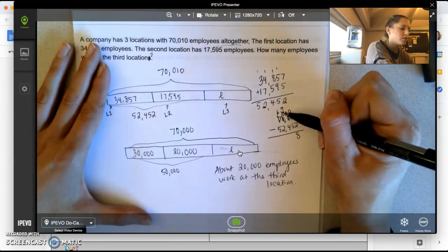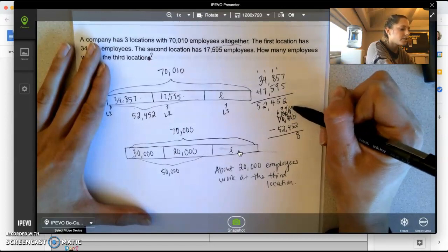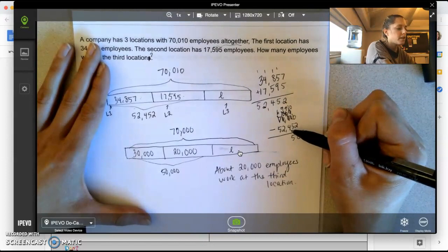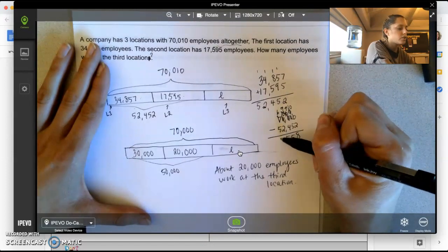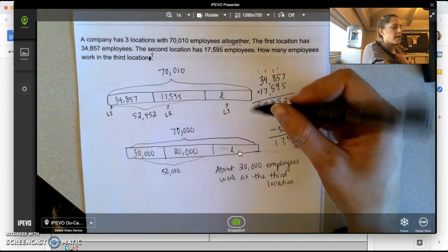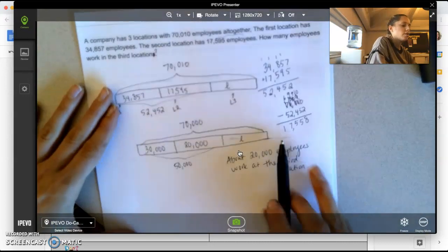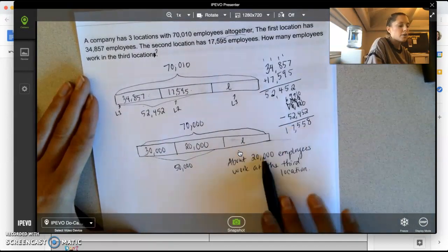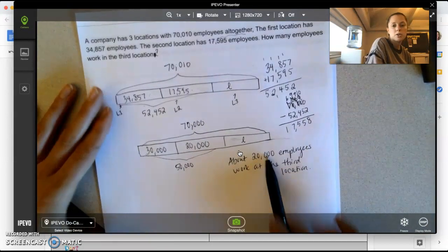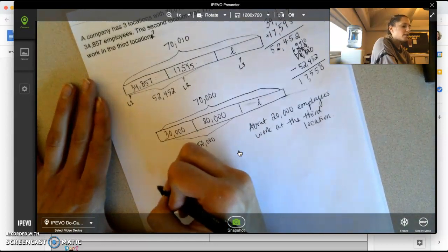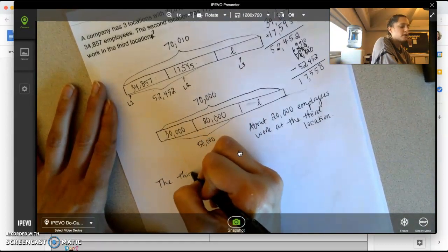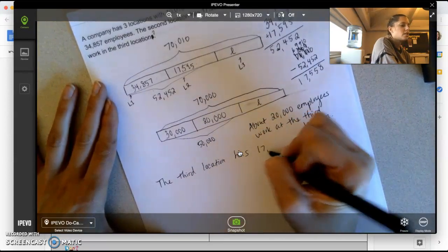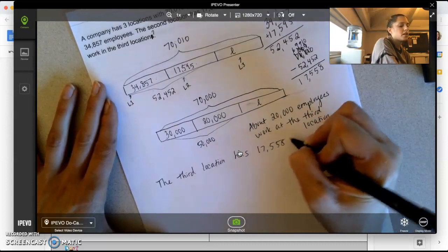Now ten can take away five. Nine minus four is five. Nine minus two is seven. Six minus five is one. So I can see that my third location has 17,558 employees. And I would say that's pretty reasonable. It's pretty close to 20,000. And so my statement will say the third location has 17,558 employees.